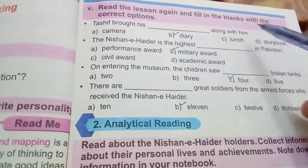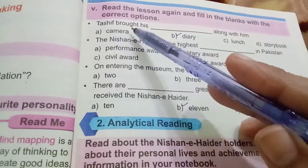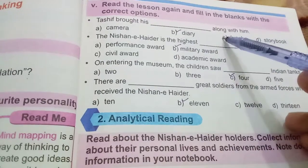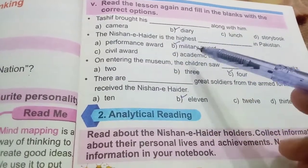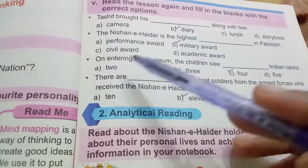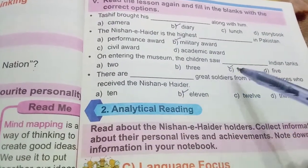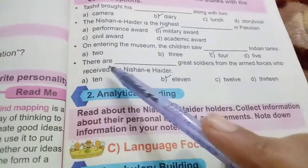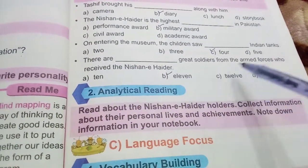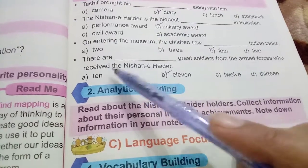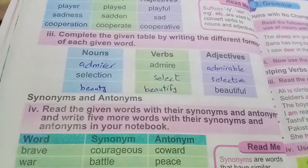Read the lesson again and fill in the blanks with the correct options. Tashif brought his diary along with him. The Nishan-e-Haider is the highest military award. On entering the museum, the children saw four Indian tanks. There are eleven great soldiers from the armed forces who received the Nishan-e-Haider.